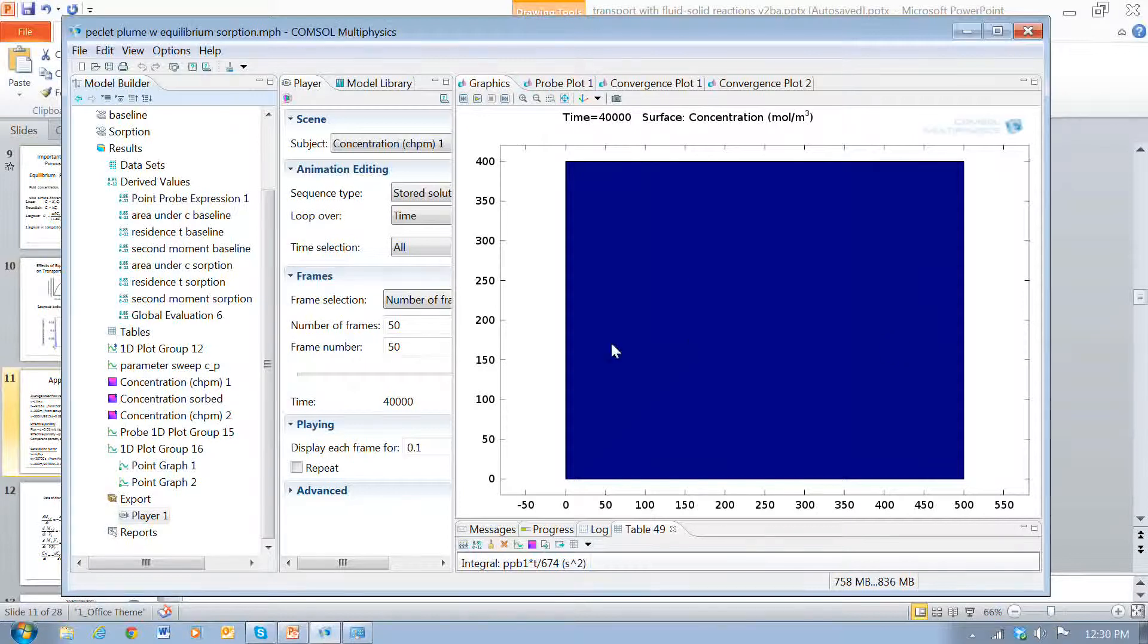So one of the things that's done is to use this kind of a pulse tracer test to determine some aquifer properties. And if we use a conservative tracer, a tracer that moves with the water and doesn't sorb